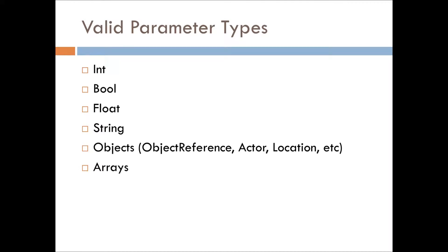Here's a portion I didn't cover last time: what are the valid parameter types? All the valid variable types are valid parameter types. We have integers, booleans, floats, strings, objects, and even arrays can be passed into functions and events — although I don't think there are any events that have been made requiring an array. I could be wrong since I'm not familiar with the script extender.